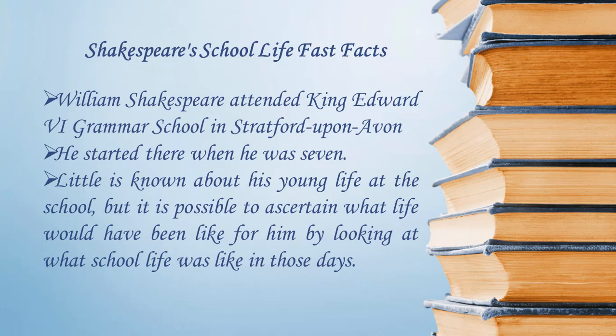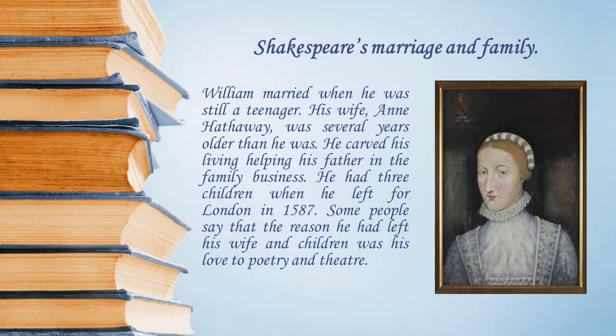Children were married off early — this is reflected in Romeo and Juliet, where Juliet is 14 and Romeo is a similar age. William Shakespeare married Anne Hathaway in November 1582, and they remained married until Shakespeare's death. At the time of their marriage, William was 18 while Anne was 26 and pregnant with their first child. The average age of marriage was 26 years of age.